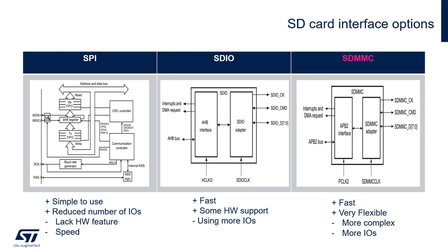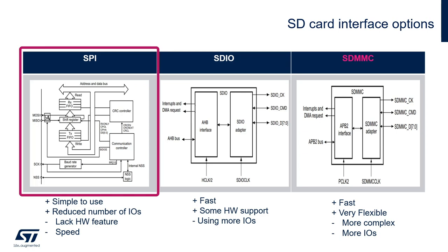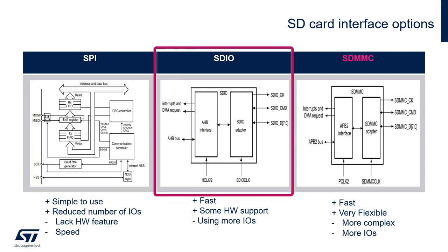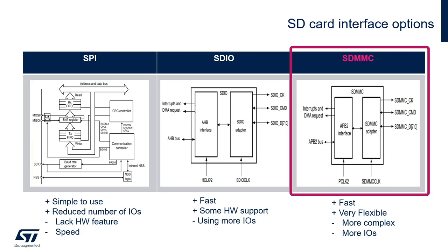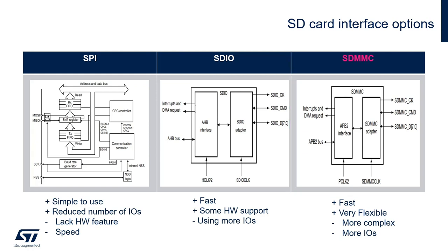Now we will look at different STM32 peripherals that can be used to interface with SD cards. Here are the three options with pros and cons. Starting from the left, the SPI is a very easy peripheral to use with a reduced number of IOs, but it lacks hardware features and also lacks speed compared to some of the other interfaces. The SDIO offers higher speed and adds more hardware features, but it uses a lot more IOs than SPI. The SDMMC offers a lot of flexibility because it embeds many features in hardware directly and is an evolution of the SDIO interface. In this video, I will be using the SDMMC.